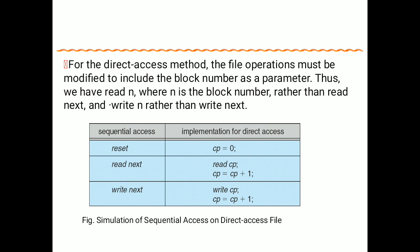You read at the current pointer and then increment the pointer by 1 in direct access method. For 'write next' in sequential access, in direct access method we go to the current pointer, execute 'write cp,' and then increment cp by 1 after writing. This is the simulation of sequential access on direct access method.